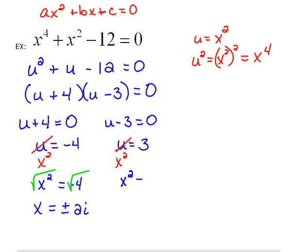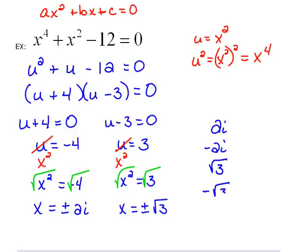For our other solution, we have x^2 = 3. To solve for x, we take the square root of both sides. So x = ±√3. Actually, in this problem, we have four answers: positive 2i, negative 2i, positive √3, and negative √3.